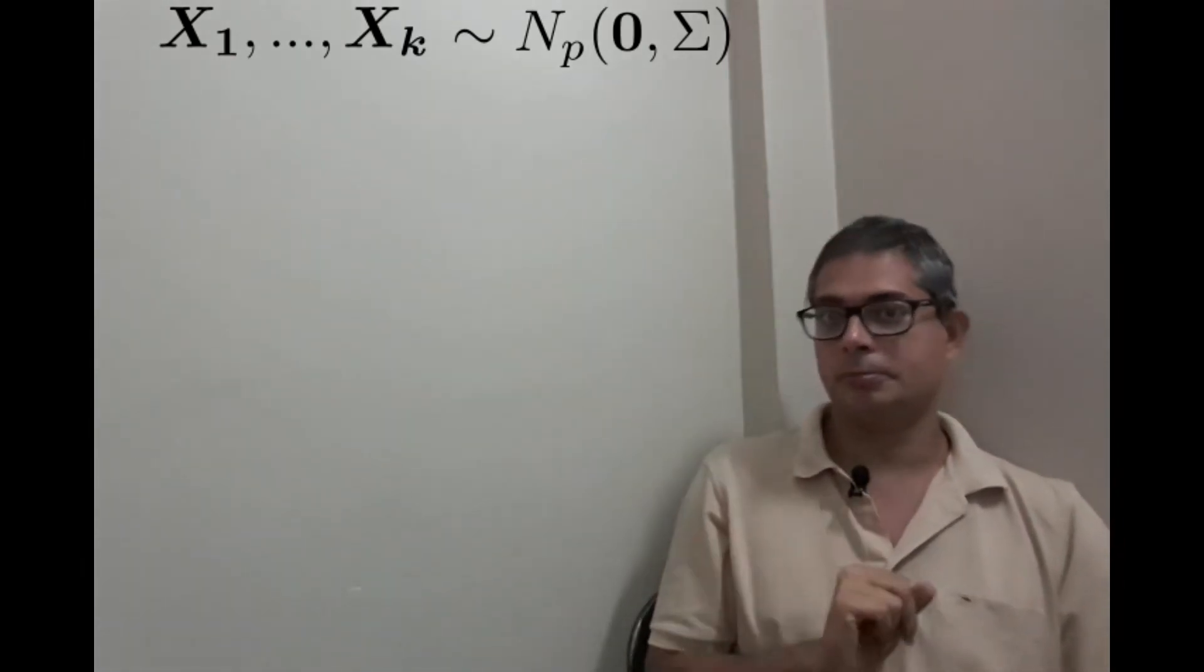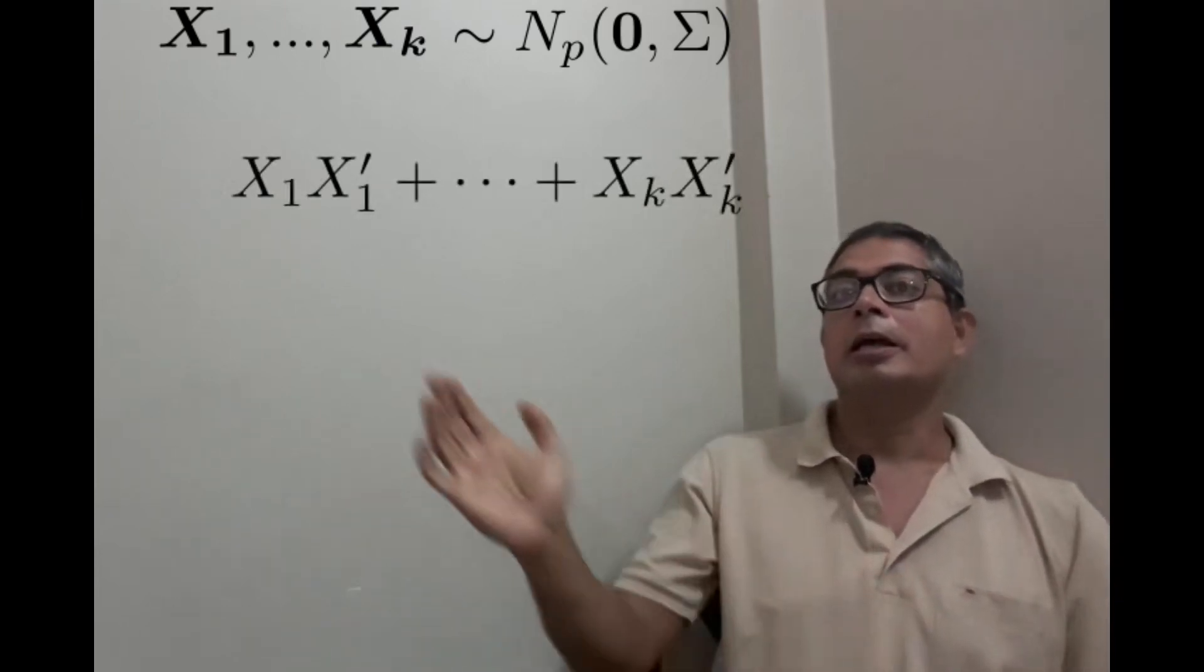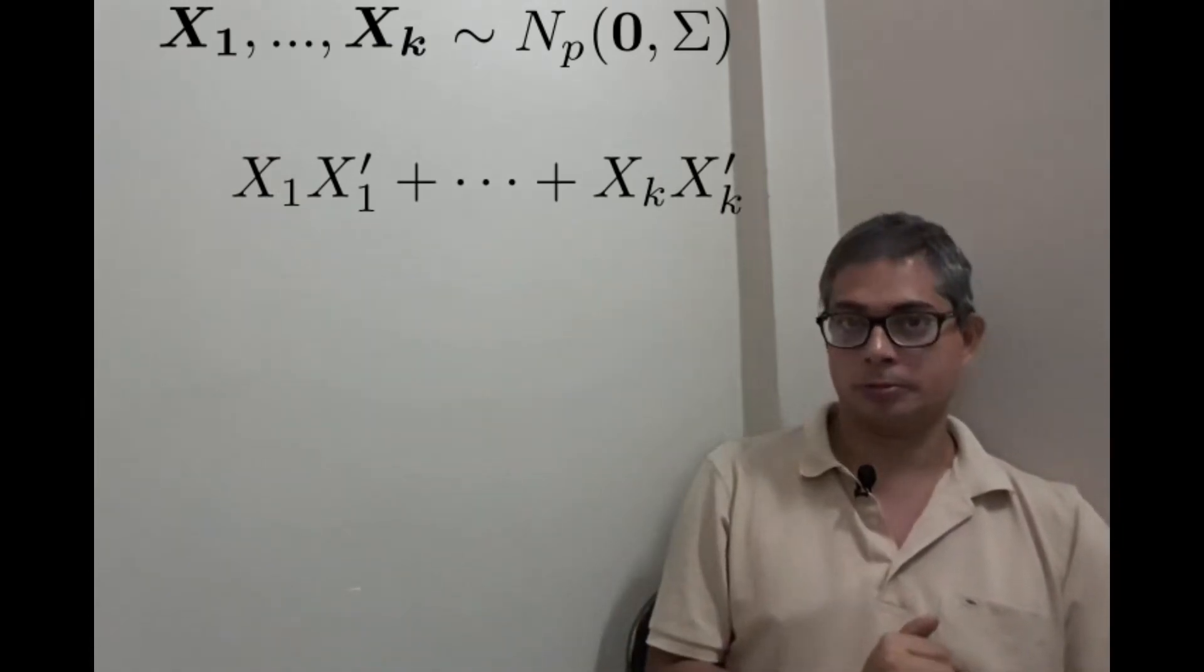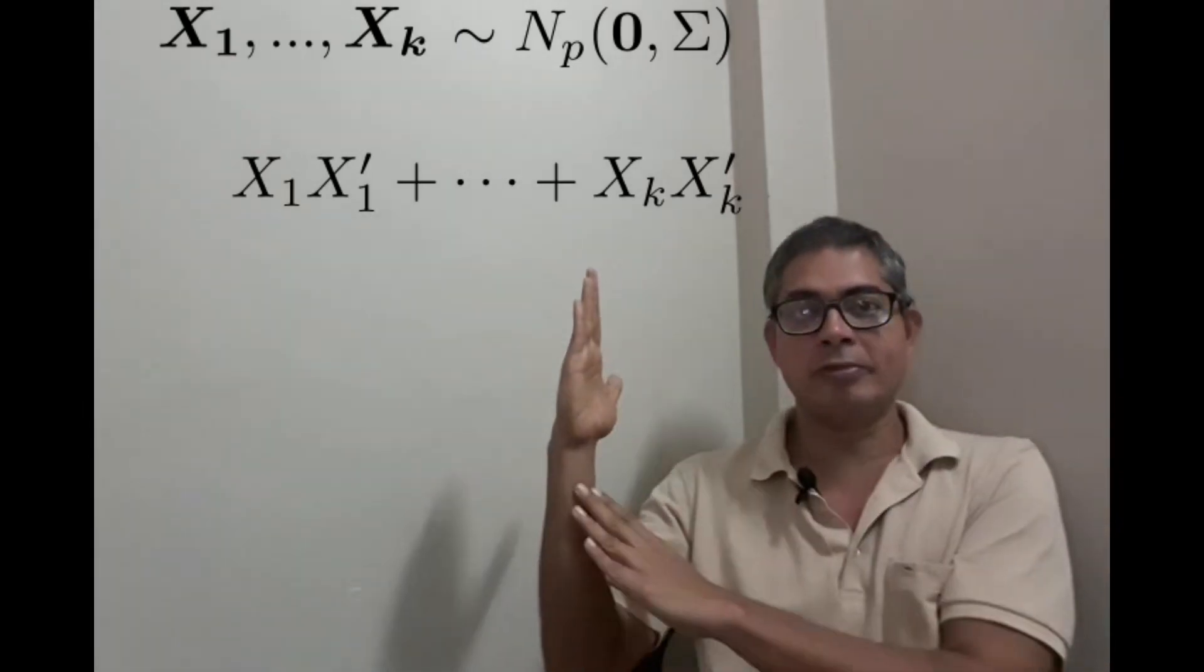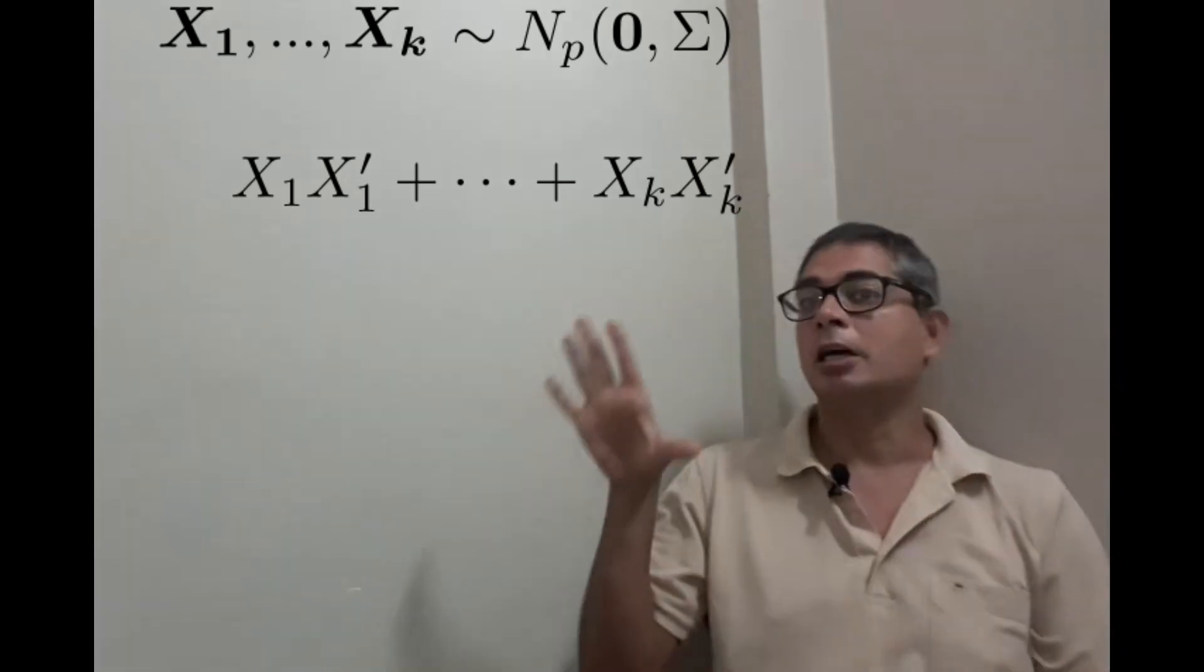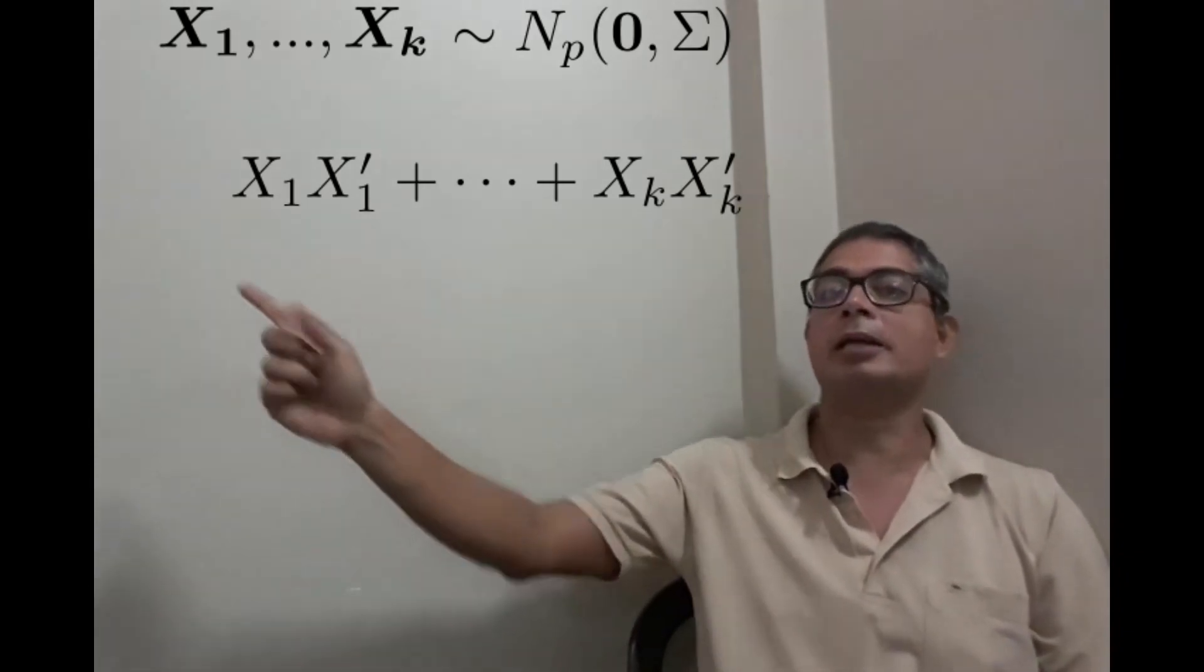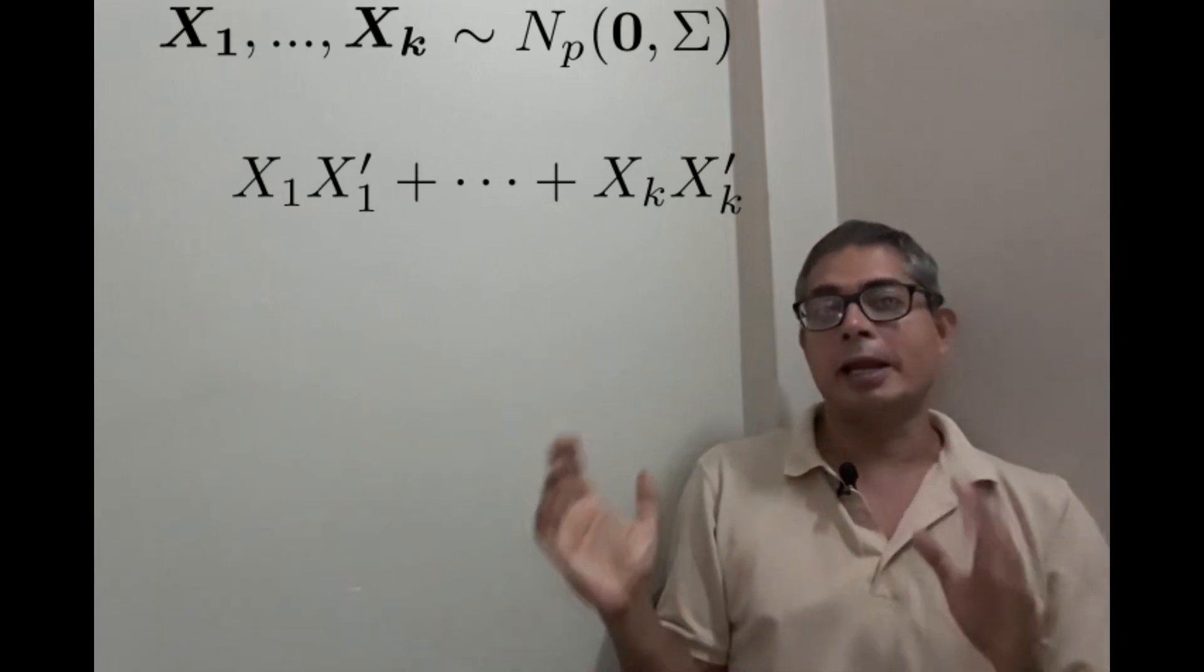Then we construct the random variable X₁X₁ᵀ + ... + XₖXₖᵀ. Here we are treating each Xᵢ as a column vector, so Xᵢᵀ is a row vector. So understand that each of these things is actually a p×p random matrix, so the entire thing is a p×p random matrix.